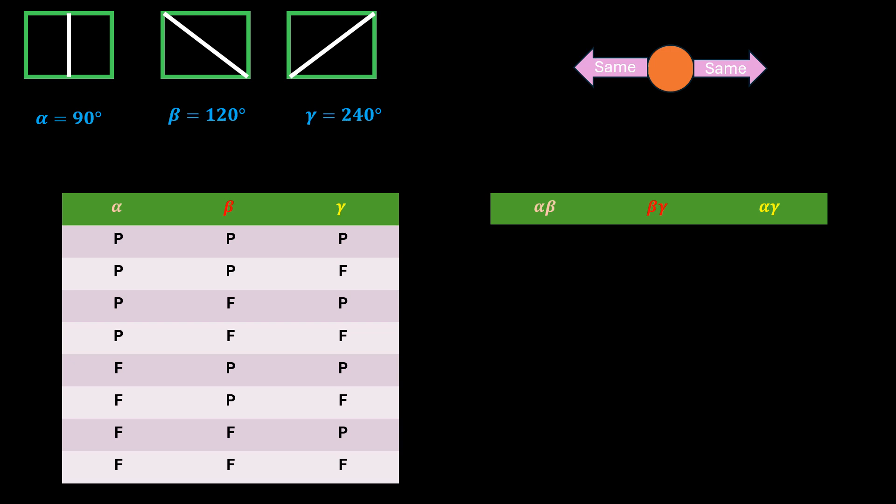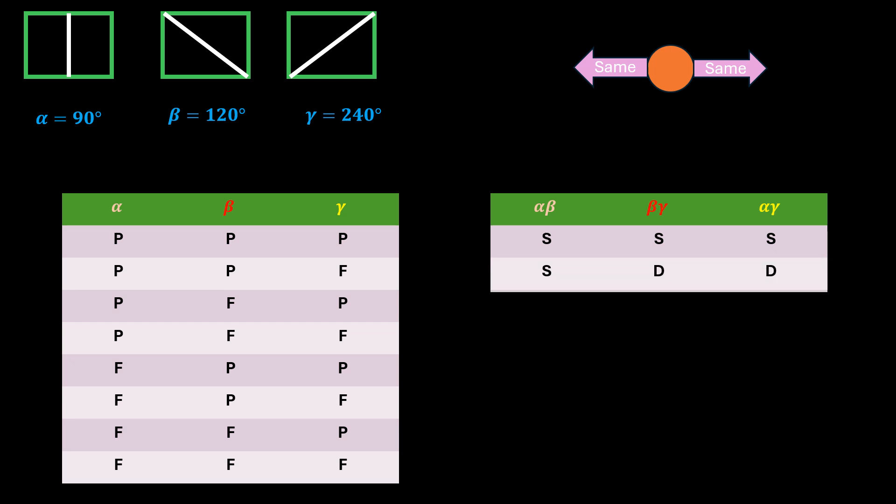For the first case, we know that the light goes through all three polarizers, so you will get the same outcome for any combination. For the second case, since the light can go through alpha and beta, if you pick alpha and beta, you will get the same outcome, and a different outcome otherwise.